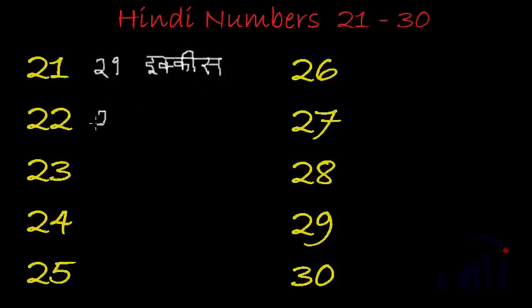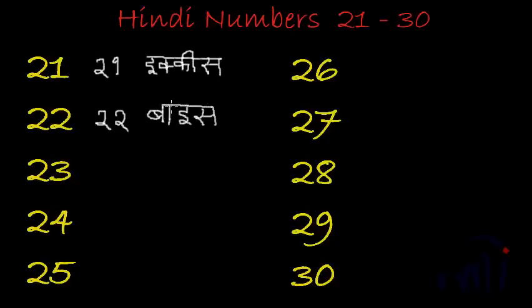22 is called baais. Ba, a ki matra, badi i sa — baais. 23 is written as teis.